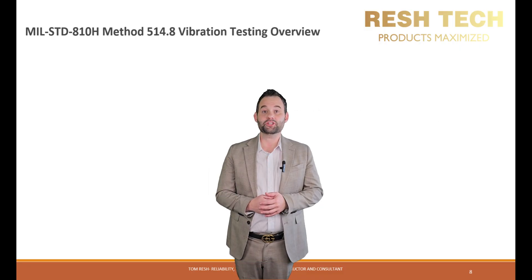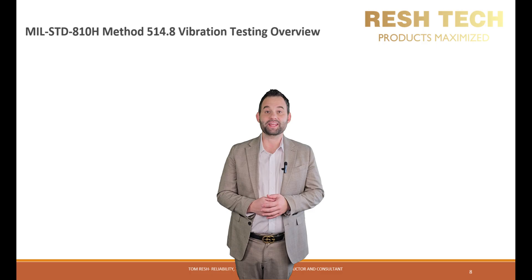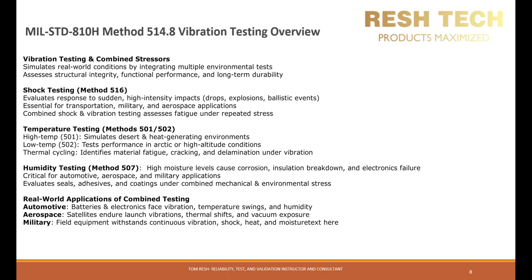Let's look at the relationship between MIL-STD 810H Method 514.8 and other methods within the standard. Method 514.8 vibration testing often goes hand in hand with other methods. For example, shock testing in Method 516 deals with sudden high-intensity events, while temperature methods 501 and 502 and humidity method 507 may be combined with vibration to simulate real-world conditions, like hot humid environments where equipment experiences continuous shaking.